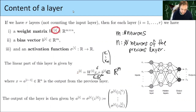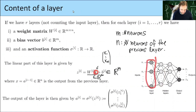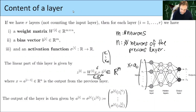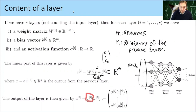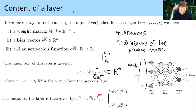After calculating the linear part Z, which is a vector of size m where m is the number of neurons, the output of this layer is obtained by applying the activation function at each entry. We use sigma applied component-wise to the vector. The result is the activation vector A for that layer, which then gets fed into the next layer.